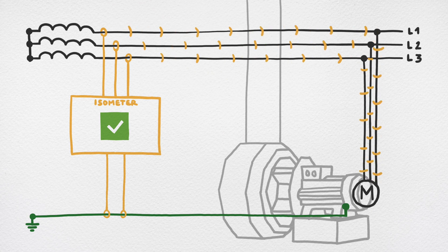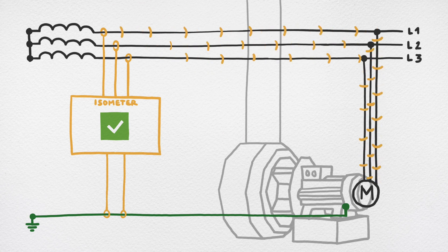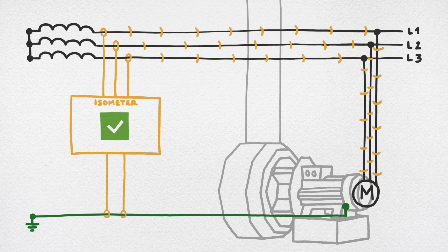In an ungrounded system, all live parts are insulated from ground. Monitored by Bender Technology, early warnings of insulation faults and degradations are reported long before the fault becomes a safety risk.